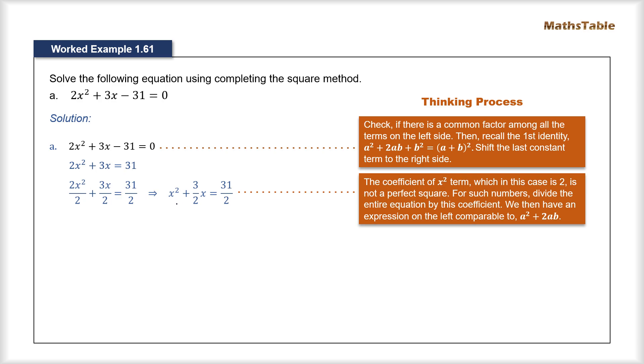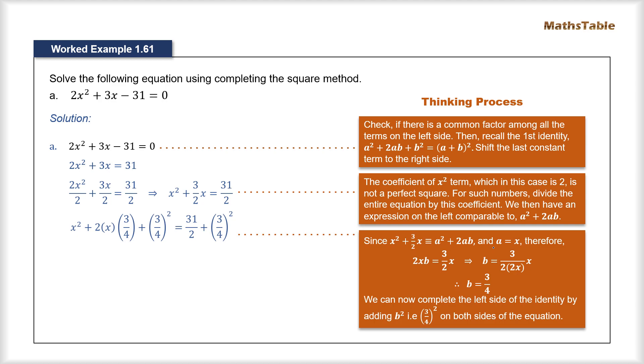Now after this what we can see that this left side can be compared with the first two terms of this identity which were a² and 2ab. Now we can easily see one thing that the first term a² can easily be compared with the first term x² in our expression. So what we can deduce from here is that in our question a is equal to simply x.